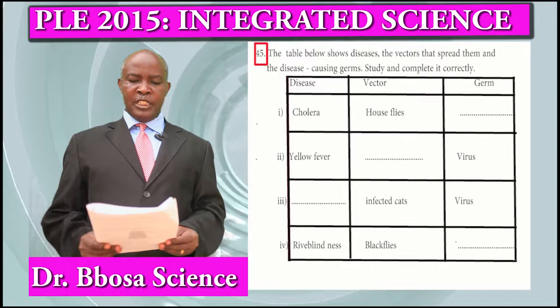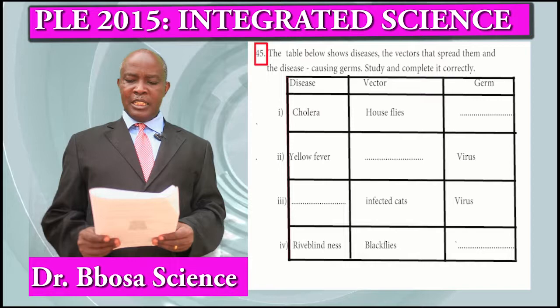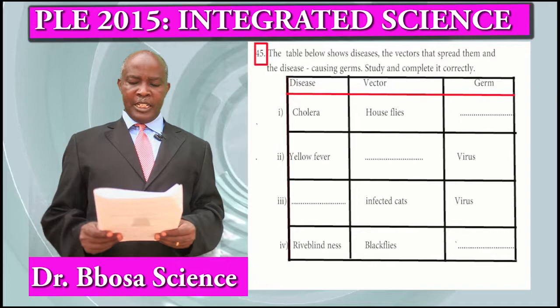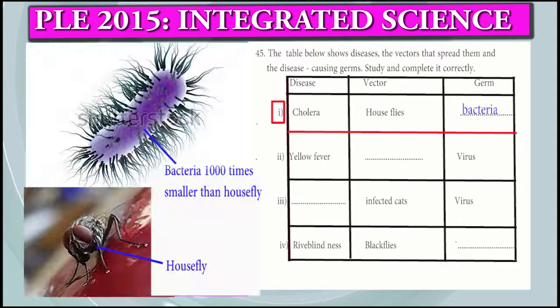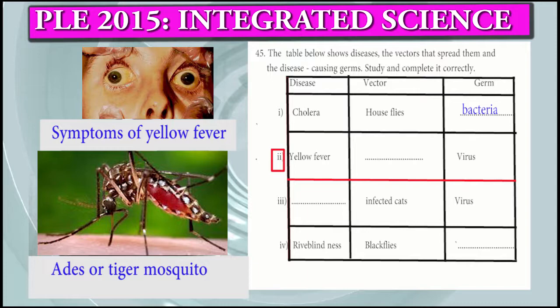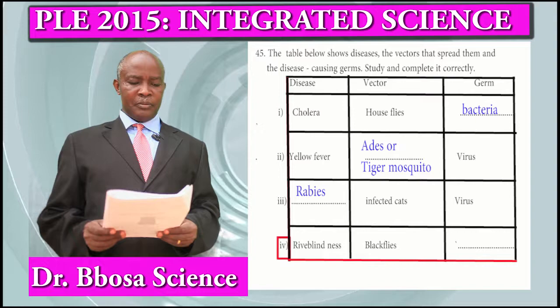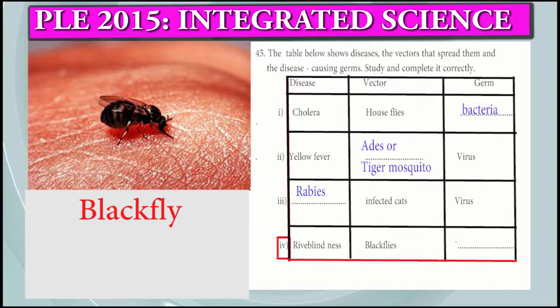Question 45: The table below shows diseases, their vectors, and disease-causing germs. Study and complete it. Disease 1 — Cholera: vector is housefly, germ is bacteria. Disease 2 — Yellow fever: vector is Aedes or tiger mosquito, germ is a virus. Disease 3 — Rabies: vector is infected cats and dogs, germ is a virus. Disease 4 — Onchocerciasis: vector is black flies, germ is worms or filarial worms.